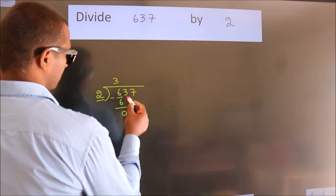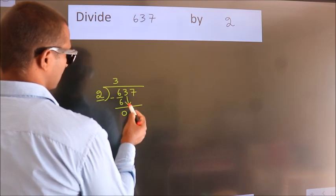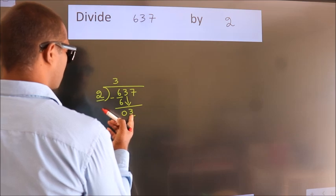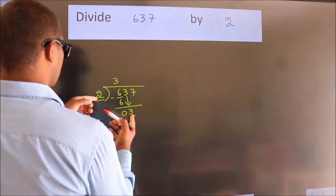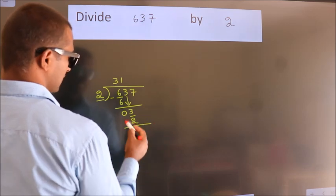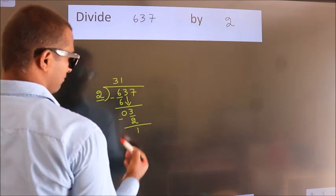After this, bring down the beside number. So 3 down. A number close to 3 in the 2 table is 2 times 1 is 2. Now we subtract. We get 1.